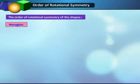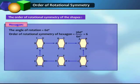Third, hexagon: the angle of rotation of a hexagon is 60 degrees, so the order of rotational symmetry will be 360 degrees divided by 60 degrees, which equals 6.